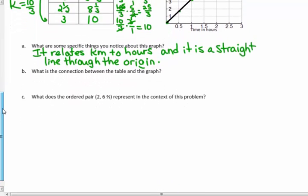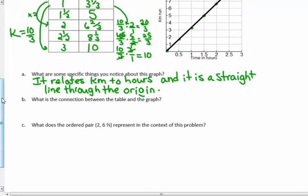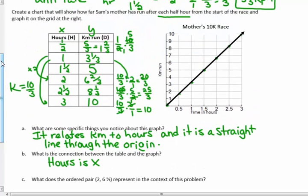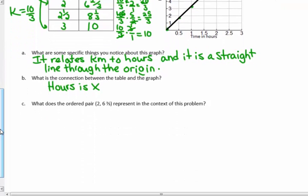What is the connection between the table and the graph? Well, the hours is my x variable. And I even put it on the table there. And, it's on the graph. This is the x-axis. Hours is the x. Kilometers is the y. And, the y-axis. And, the points are the same. Right? The points on the chart are the points that are on the graph. So, I could say that. The points are the same. And, they are going up at the same constant rate.